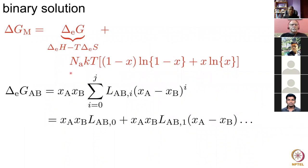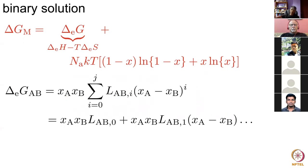In a binary solution we have the excess free energy of mixing and the contribution from configurational entropy. The excess free energy term is represented by a polynomial of the form xA·xB multiplied by a coefficient, which is also multiplied by the concentration difference raised to the power i. This i means you can extend the polynomial to however many terms you need to accurately represent the excess free energy data.